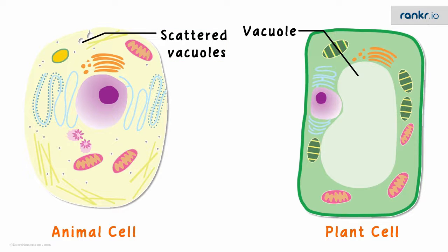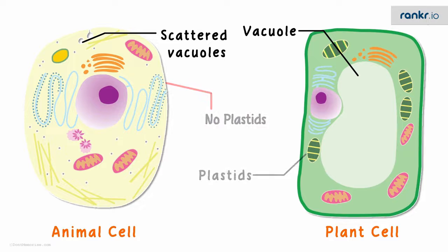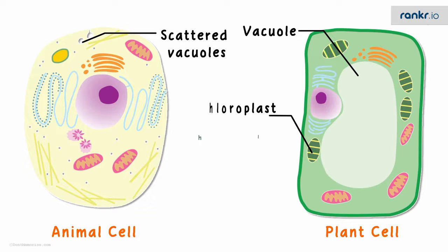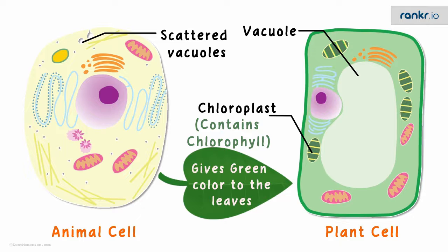Also, in the plant cell, there are several colored bodies. Do you know what they are called? They are known as plastids. These are absent in animal cells. This plastid in the plant cell is called the chloroplast and it contains chlorophyll. This pigment gives the green color to the leaves, and chlorophyll is used for the process of photosynthesis.